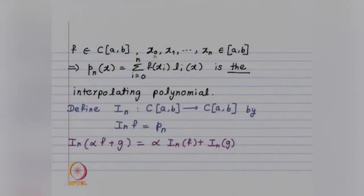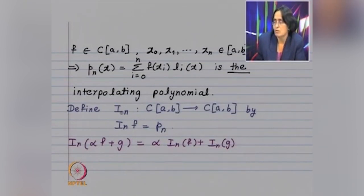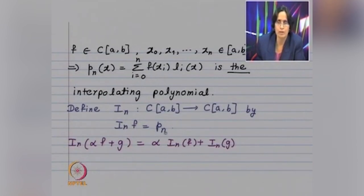We look at a continuous function defined on C[A,B], where x₀, x₁, ..., xₙ are n+1 distinct points in the interval [A,B]. We know that there is a unique interpolating polynomial which interpolates the given function at these points x₀, x₁, ..., xₙ. That interpolating polynomial is given by the summation i goes from 0 to n of f(xᵢ)·lᵢ(x). This is the Lagrange form.